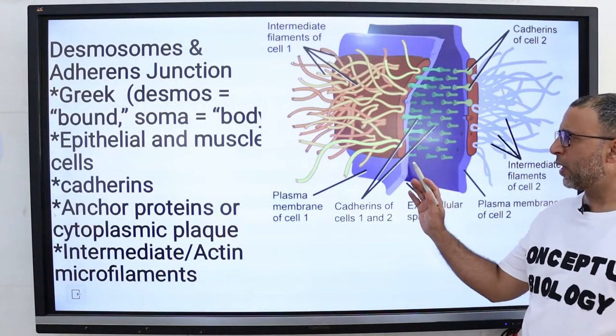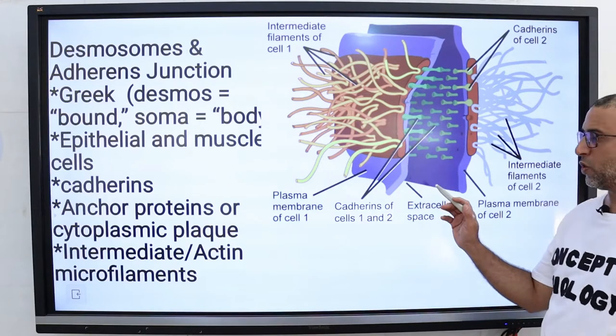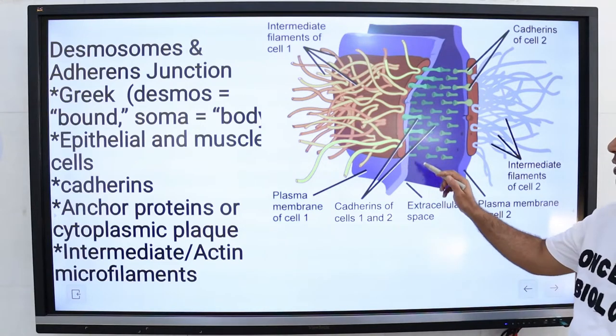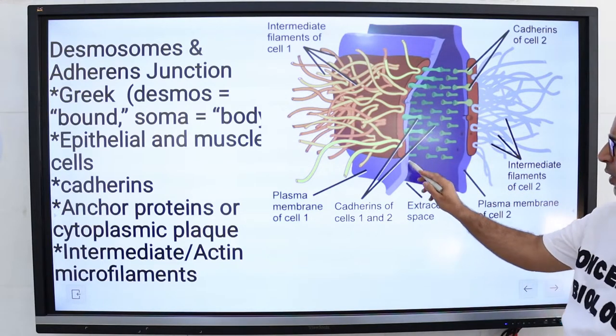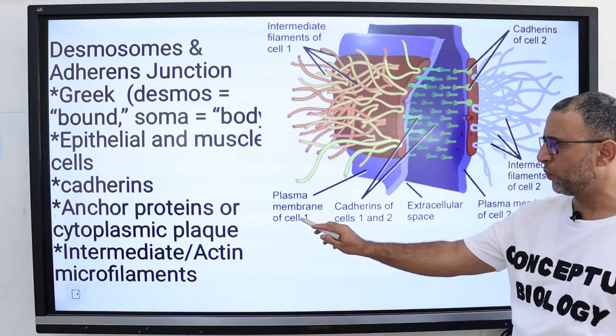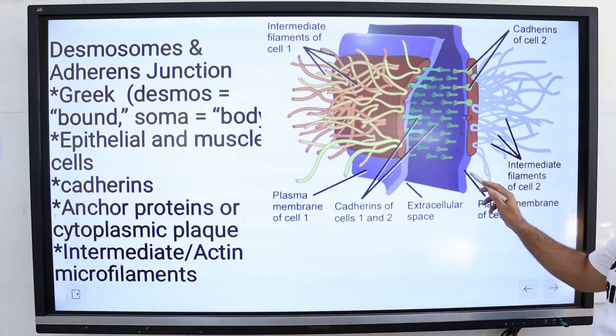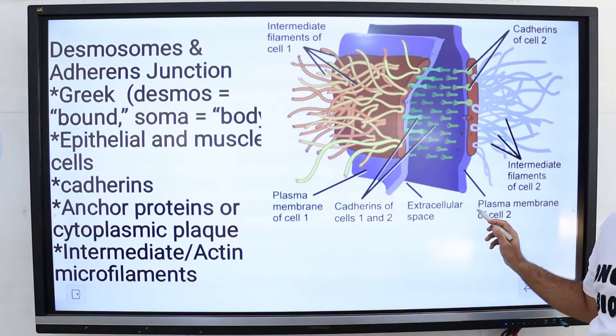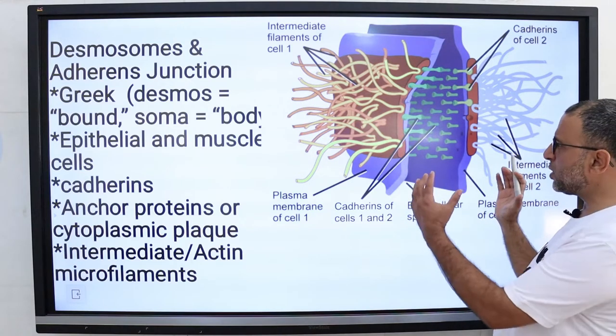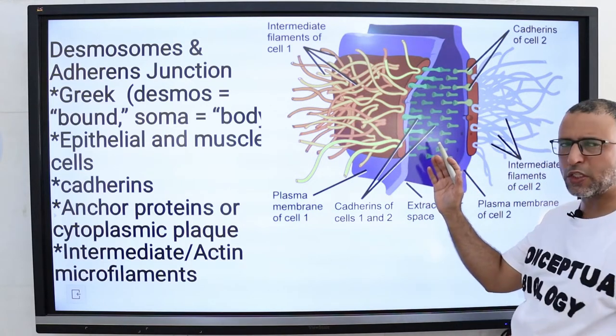Desmosomes are the points of attachment between two cells. Suppose we have two animal cells bounded by plasma membrane. This is the plasma membrane of cell one and this is the plasma membrane of cell two. These two cells are attached by desmosomes.